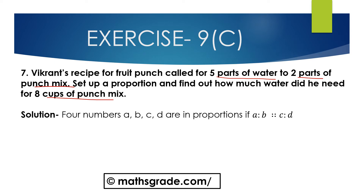The ratio of quantity of water to punch mix: 5 parts of water is to 2 parts of punch mix. Suppose the quantity of water is x parts, then x is to 8 cups of punch mix.